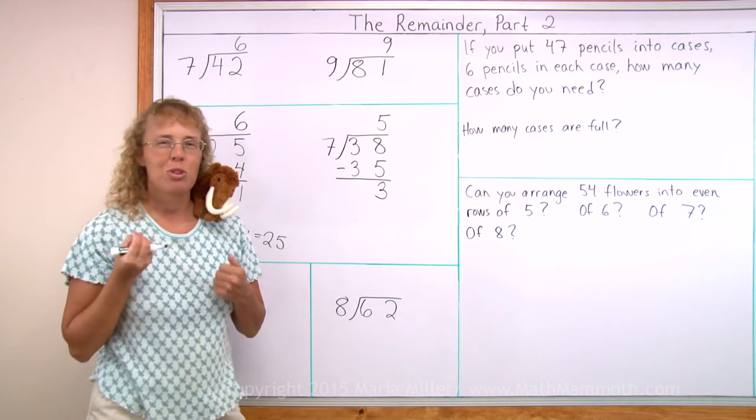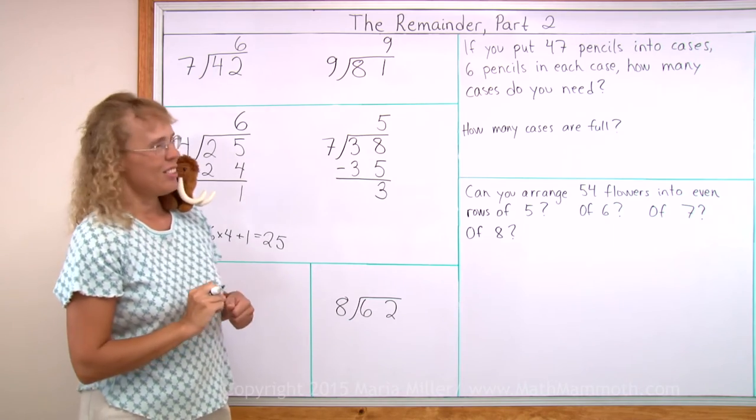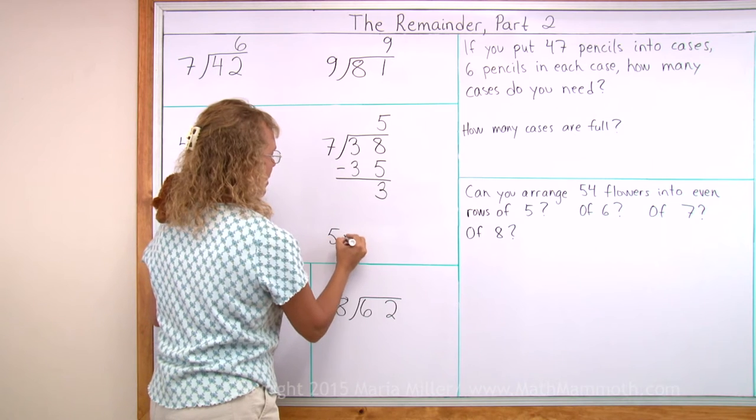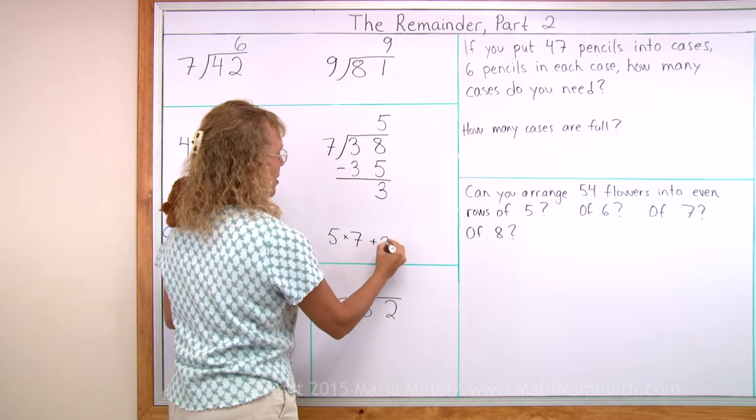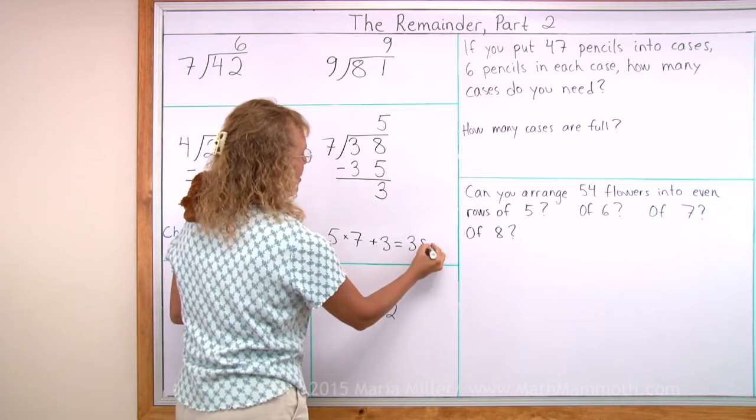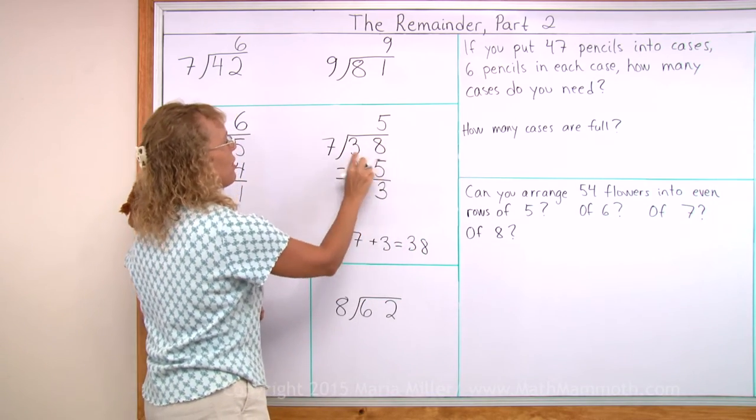How about here? How would you check it? First, multiply, then add. Multiply 5 times 7 and add the remainder. So we get 35 plus 3, 38. And that is the number we are dividing, the dividend.